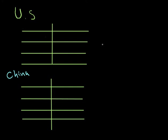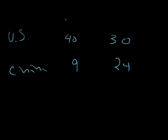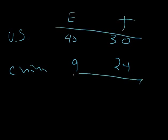It means that the world in general can produce the following things. The U.S. produces 40 engineering and 30 toys. China produces 9 engineering and 24 toys, so we'll put engineering up there and toys here. So the world production of engineering is 49, and the world production of toys is 54.